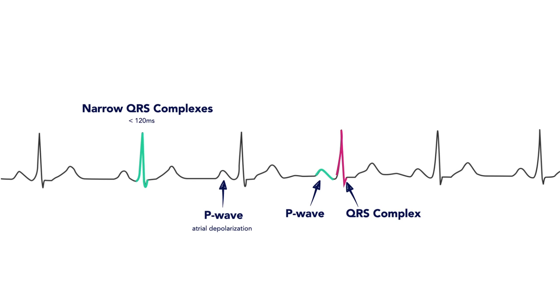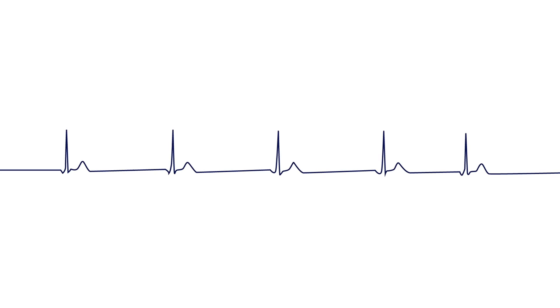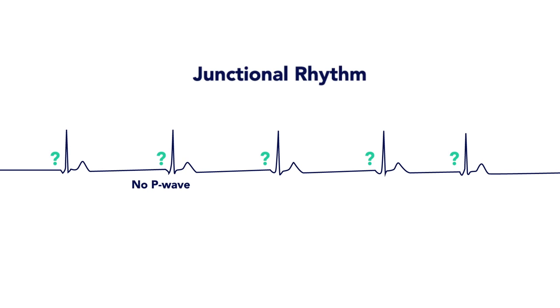If you don't see P waves, then the rhythm is not sinus. For example, this strip where P waves are not seen is an example of a junctional rhythm, where the pacemaker is not coming from the sinoatrial node.